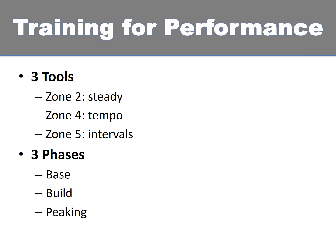Now we're going to shift gears and talk about training for performance. You're going to get health benefits in training for performance because we'll encompass those ACSM goals. But it's going to get slightly more complex, and we'll include a little bit more volume because we're trying to optimize performance. This is what I call the three tools, three phases approach — a stripped-down version of basic run periodization used by just about everybody. We're going to use only three tools: zone two, which we'll call steady running; zone four, which we'll call tempo; and zone five, which we'll call intervals. And we're going to have three phases: a base building phase, a building phase, and a peaking phase.